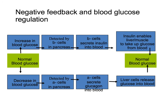Let's look at negative feedback and blood glucose regulation. After a meal, any carbohydrates in your food will be digested and absorbed and will lead to an increase in blood glucose. This is the stimulus that is detected by the beta cells in the pancreas, and leads to the beta cells secreting insulin into the blood. The insulin travels in the blood to liver and muscle cells, causing those cells to take up glucose from the blood. So blood glucose levels fall and are restored back to normal.